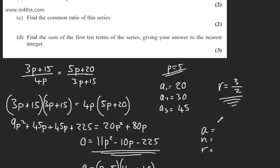So we've got the first term, which is 20, the number which is 10, and we have a common ratio of 3 over 2.